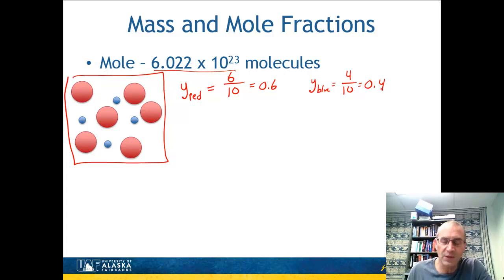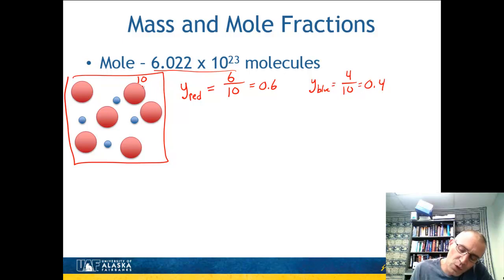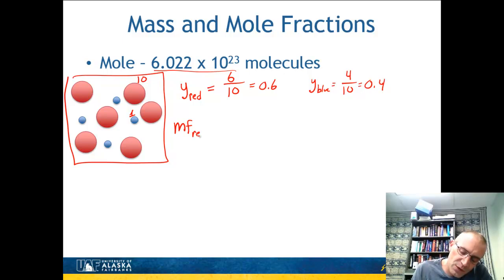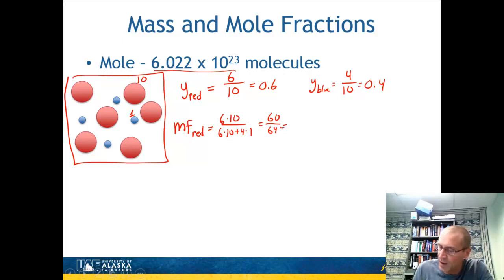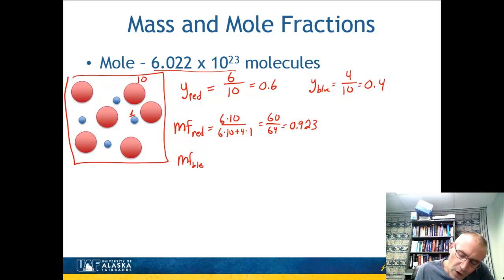Now let's talk about mass fractions, which use the symbol mf. Let's give these molecules some mass: the red ones weigh 10 and the blue ones weigh 1. The mass fraction of red is 6×10 divided by (6×10 + 4×1), which is 60/64 = 0.923. The mass fraction of blue is 4/64 = 0.077.